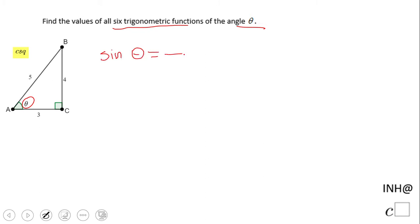Let's start with sine. Sine of theta is defined as opposite over hypotenuse. In our case, the opposite side is 4 and the hypotenuse is 5.